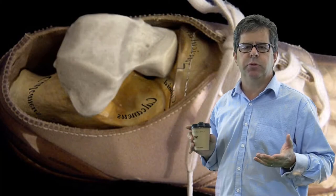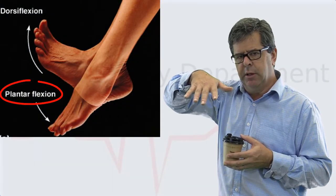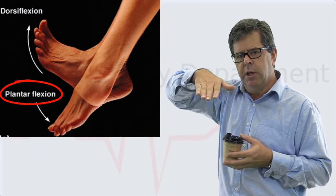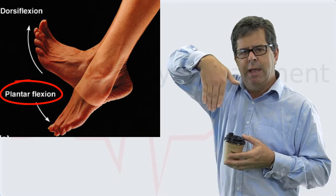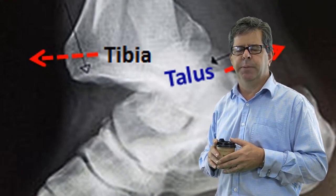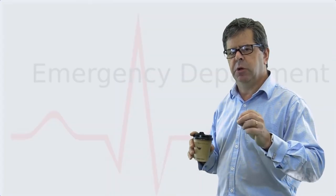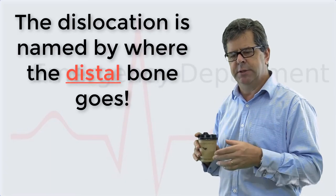The talus is trapezoidal shaped, so when you have plantar flexion of the ankle, it becomes somewhat unstable. If you then apply a force to it laterally or anteriorly, you can get a fractured dislocation of the talus and tibia. Now, something on nomenclature: the way the talus moves is how it's described. So if the talus moves posteriorly, it's a posterior dislocation; if it moves anteriorly, it's an anterior dislocation.